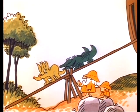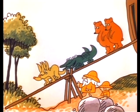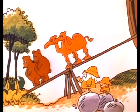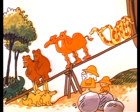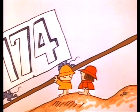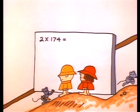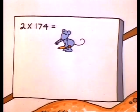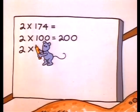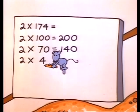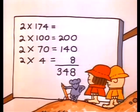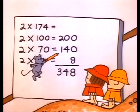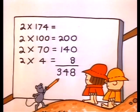Elementary, my dear — two times two is four. Elementary, my dear — two times three is six. Elementary, my dear — two times four is eight. Elementary, my dear — two times five is ten. Now, if you want to multiply two times a hundred and seventy-four — some big number like that — two times 174 equals two times a hundred, plus two times seventy, plus two times four. So two times 174 equals 200 plus 140 plus 8, which is 348.